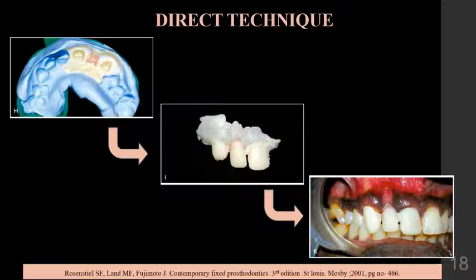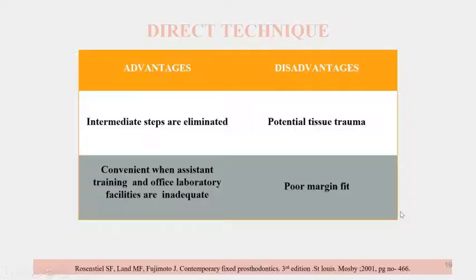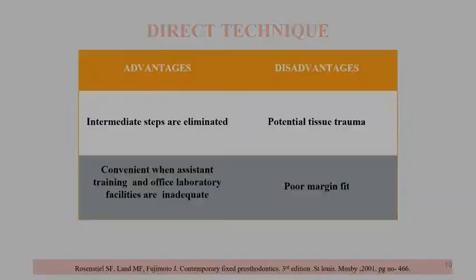Once polymerization is completed, trimming, finishing, and polishing are done, followed by final cementation. The advantage of the direct technique is that intermediate steps are eliminated and it is convenient when assistant or laboratory support is inadequate. The major disadvantages are potential tissue trauma due to heat production and poor marginal fit due to shrinkage.